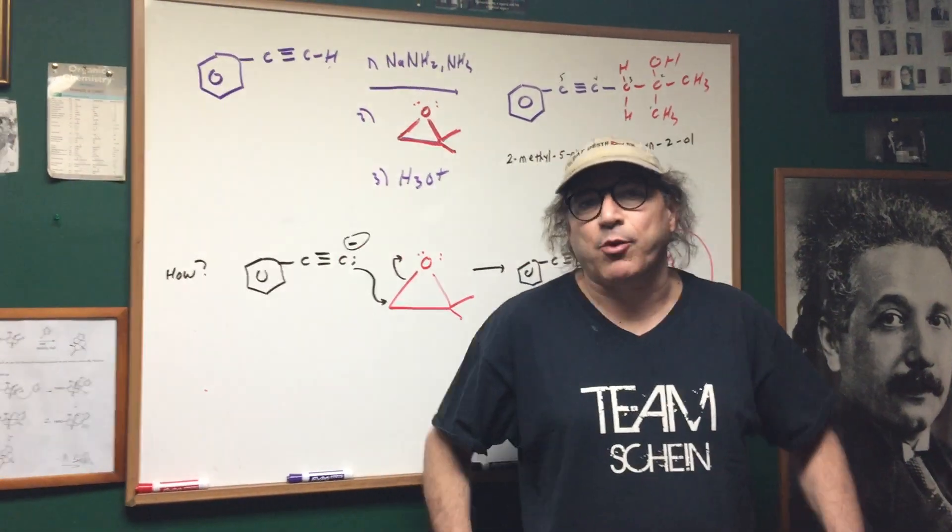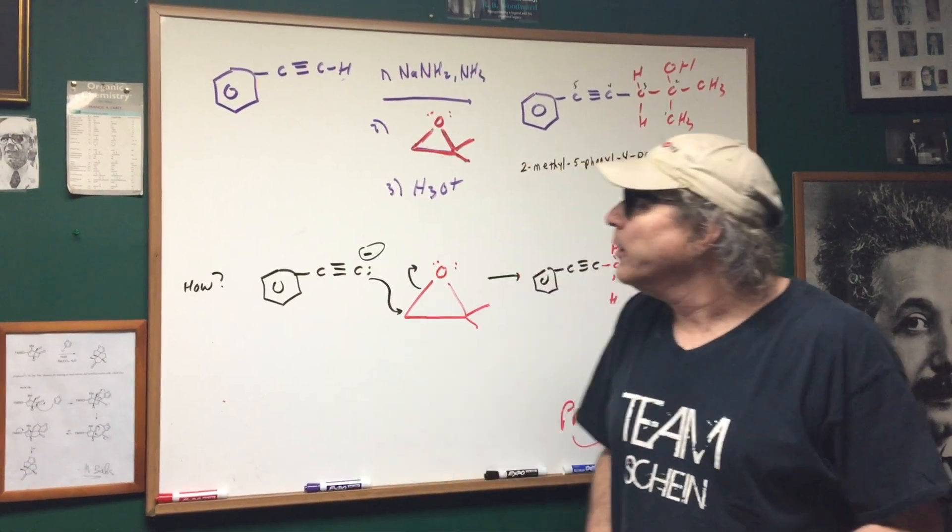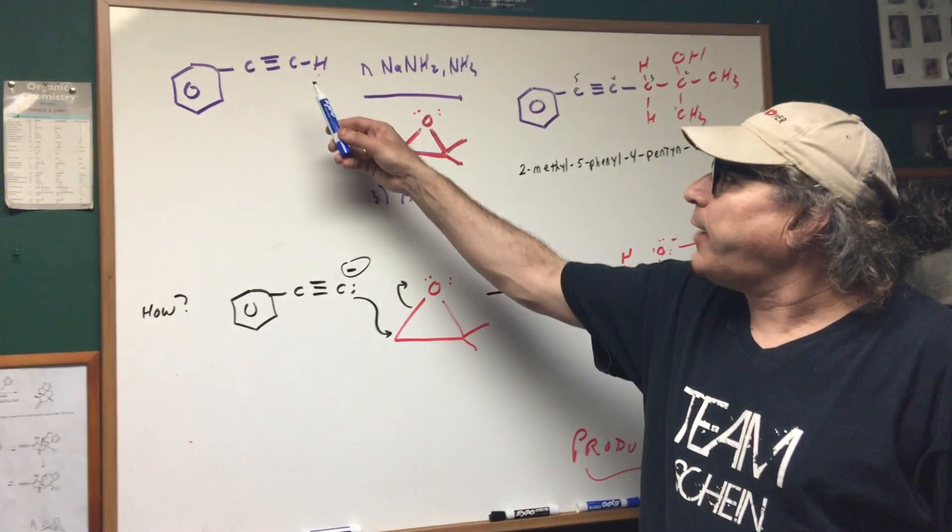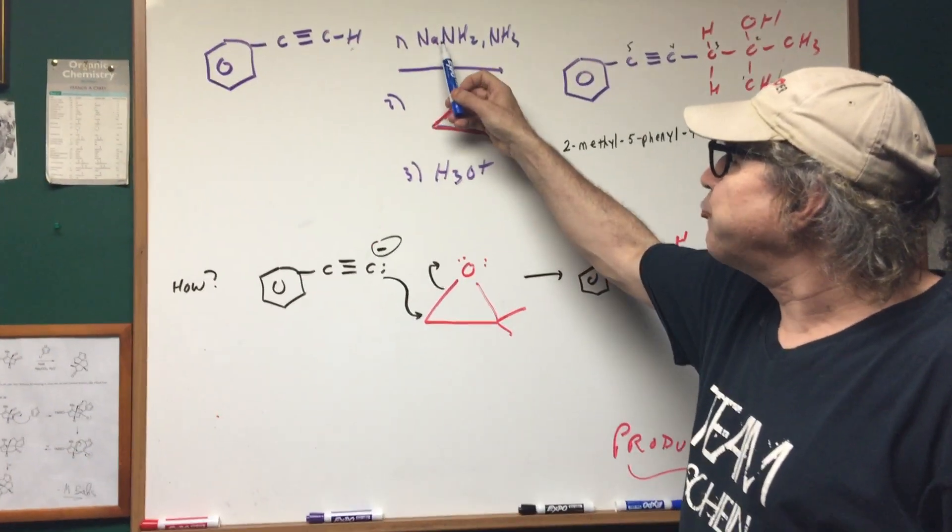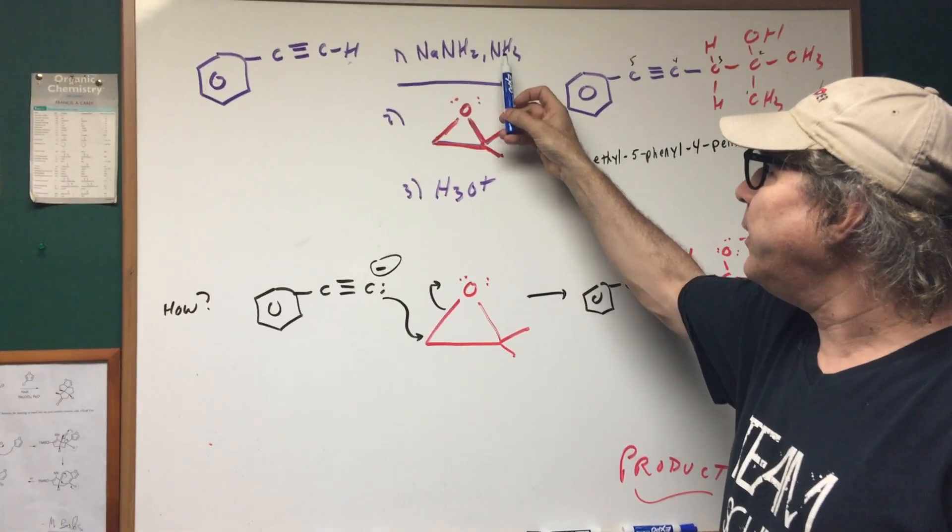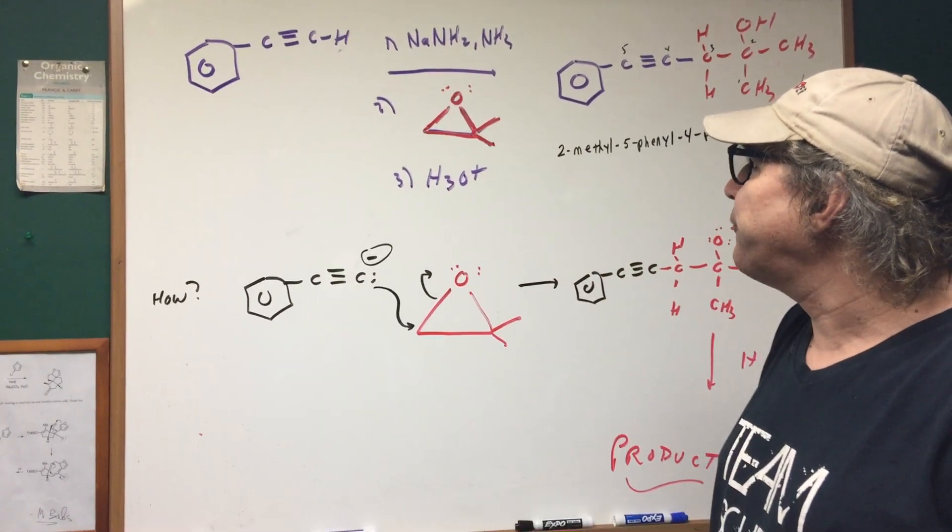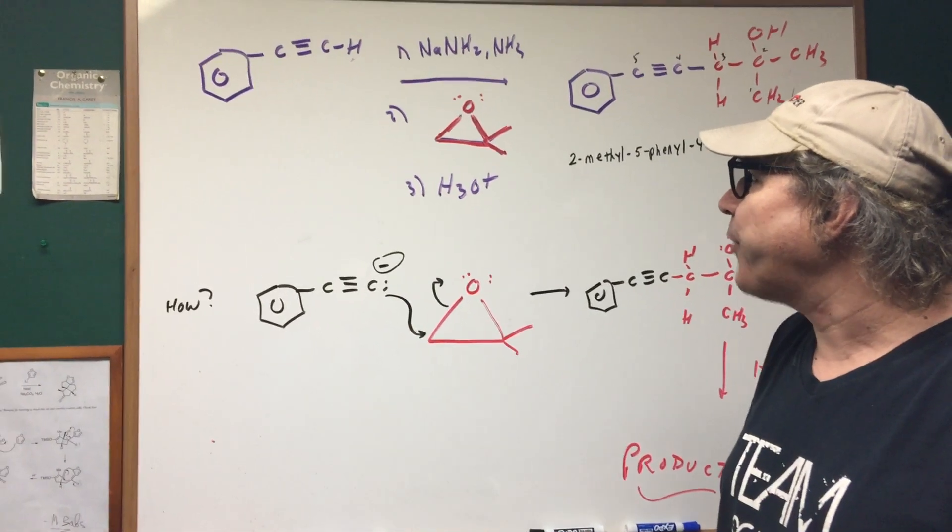I want to go over a type of question that you're likely to see on the DAT exam. So let's have a look. What I'm going to do is I'm going to take this compound and I'm going to treat it with these three reagents. I'm going to have sodium in ammonia, then the epoxide and then I'm going to acidify it. And I want you to tell me what the final product is.